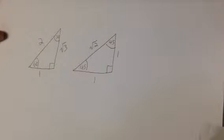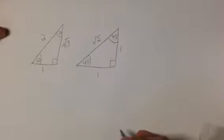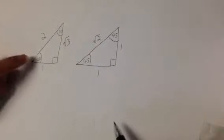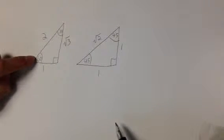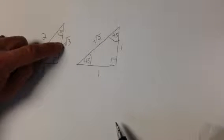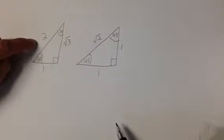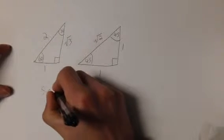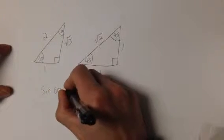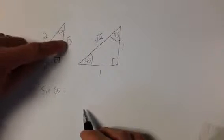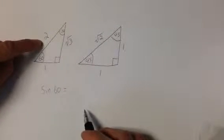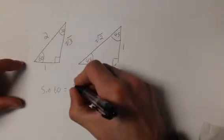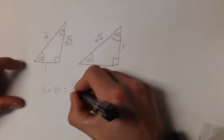What we get from these special triangles are a few trig ratios. If you look here, we have 60 degrees, and across from it is root 3, and the hypotenuse is 2. What that means is that the sine of 60 degrees is equal to opposite over hypotenuse. That makes it root 3 divided by 2.